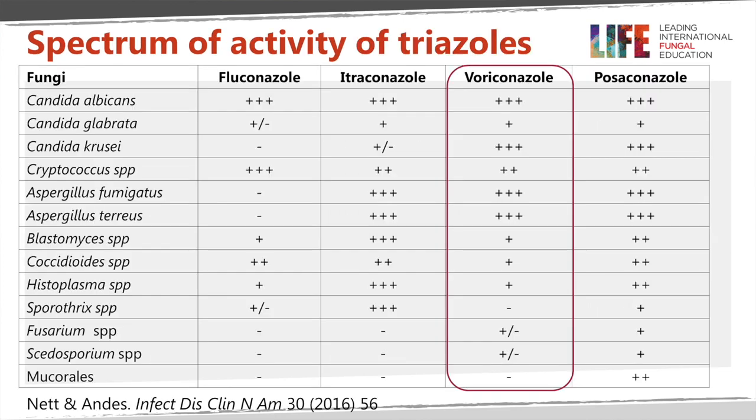Here's a spectrum of activity comparing fluconazole, itraconazole, voriconazole, and posaconazole. You can see quite a lot of differences between the different drugs. Voriconazole really has its great strength in terms of Aspergillus, but it also has activity against some fluconazole-resistant yeasts, which is also particularly helpful.